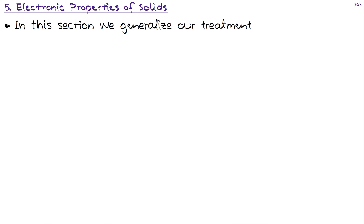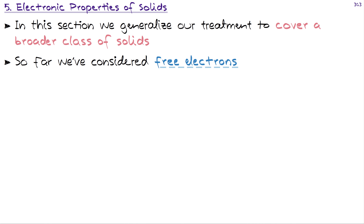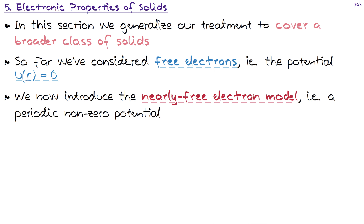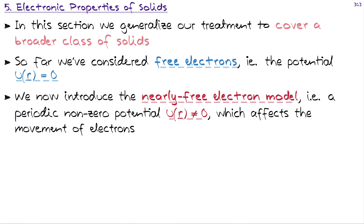Let's start with the brief introduction on our section in general. What we are covering in chapter 5 is that we will generalize this treatment into a broader class of solids. So far we have considered free electrons, with a potential that is zero. In the upcoming 5.4 section we will introduce the nearly free electron model, where we introduce a non-zero potential, so U(r) is not zero anymore. This will affect the movement of electrons, and many interesting things come about by extending this model.